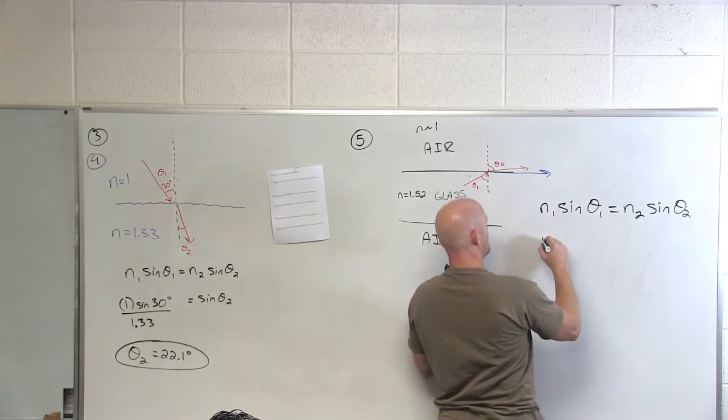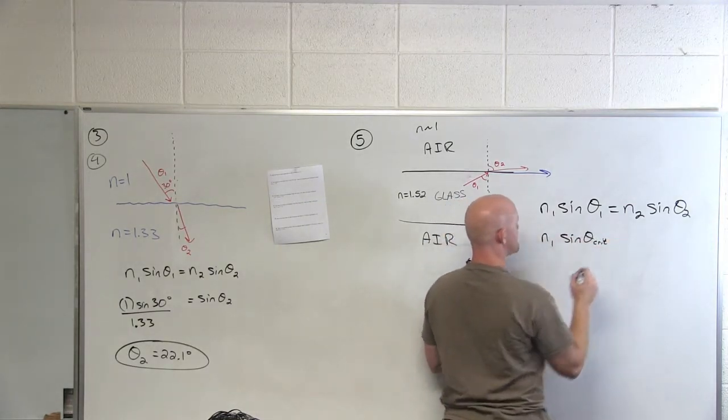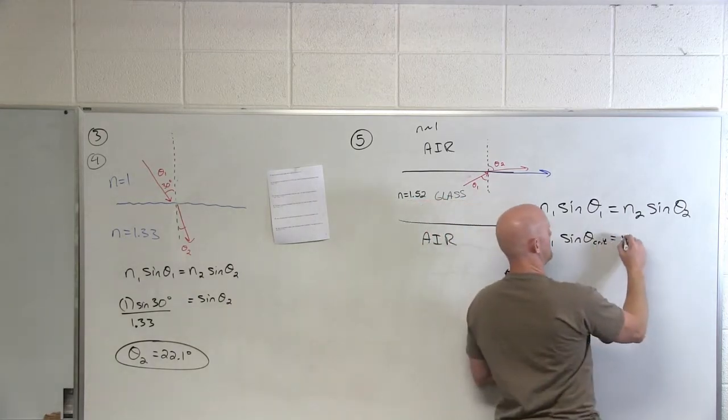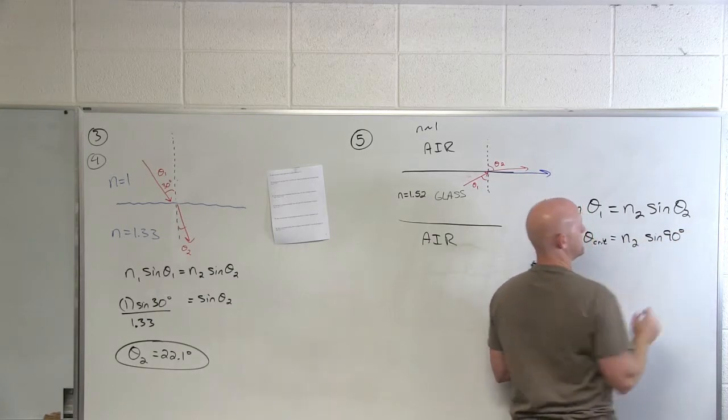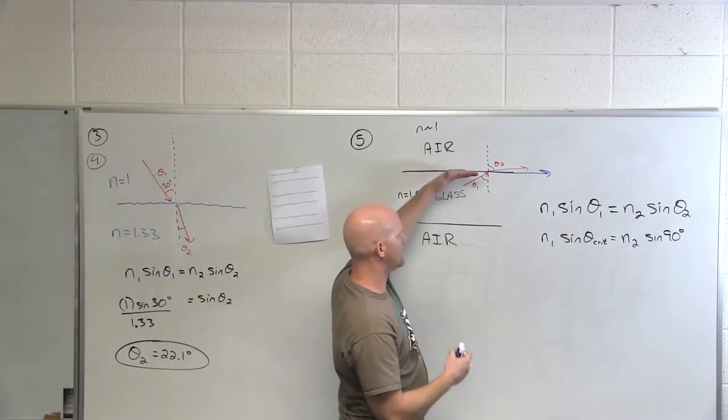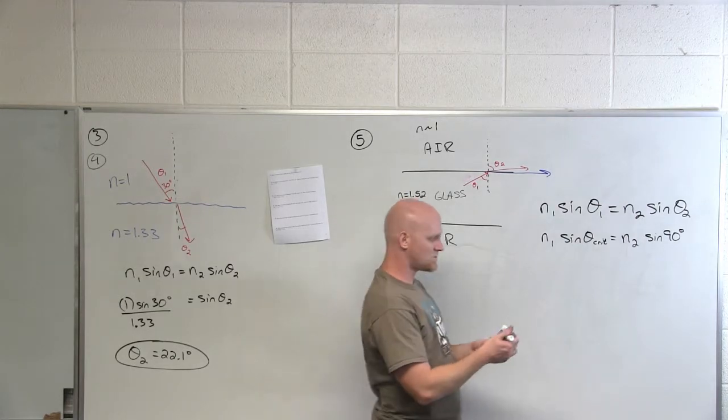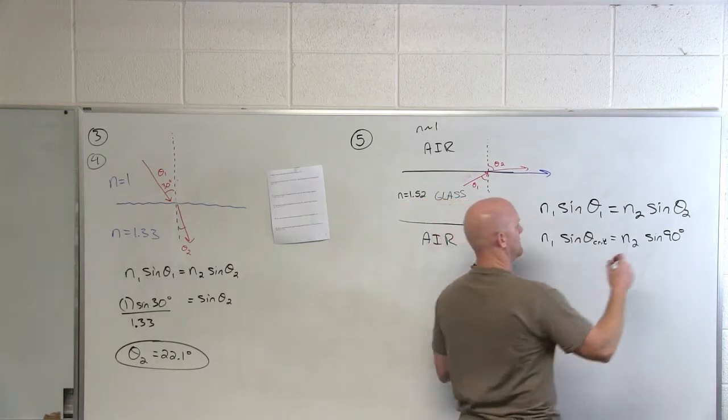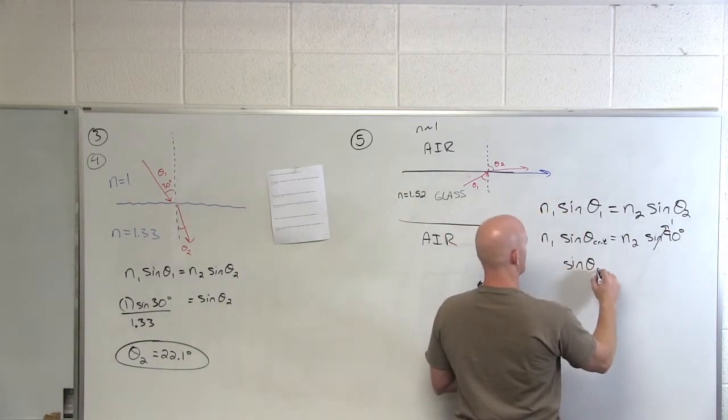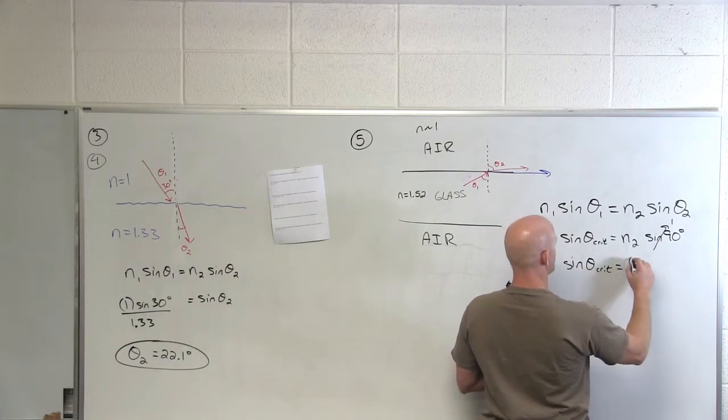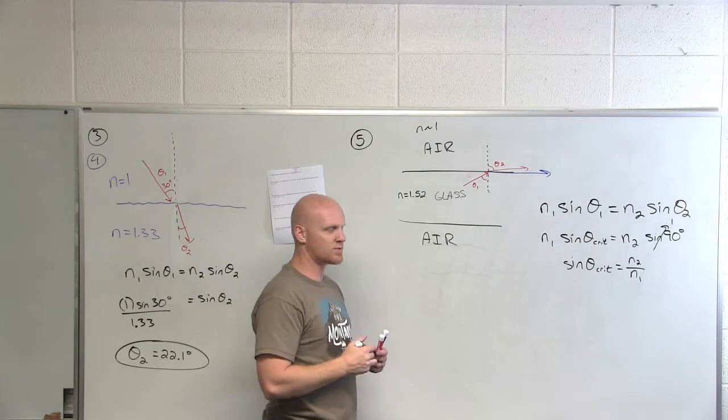We'd call that angle where that just begins to happen the critical angle. That occurs when your theta 2 here is 90 degrees. That way it all runs parallel to the surface, none of it actually ends up transmitted to the next medium. What's the sine of 90? Good, that's 1. So you get the sine of your critical angle is equal to n₂ over n₁, and then you can take the inverse sine to get the critical angle. That's where that comes from.